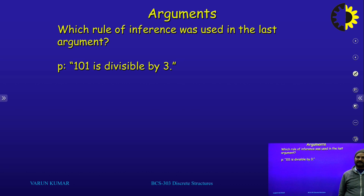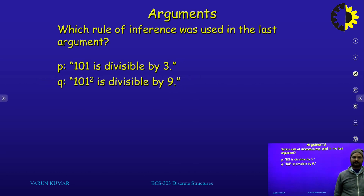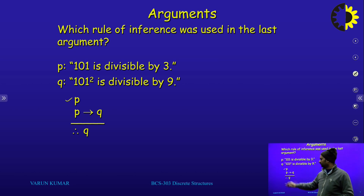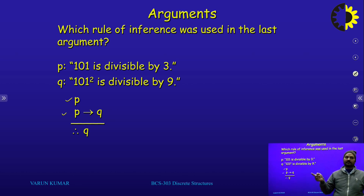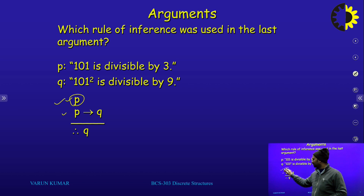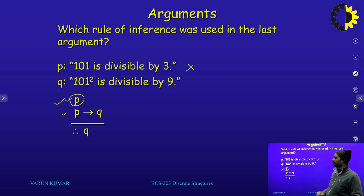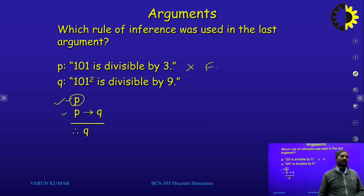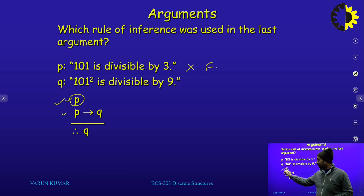Let p be '101 is divisible by 3,' then q is '101 squared is divisible by 9.' My first statement is p, my second statement is p implies q. The value of p — '101 is divisible by 3' — this particular statement must be true, but it is wrong; it possesses the Boolean value false. So our conclusion is not valid. Although this formula is available in the rules of inference, all propositions must be correct.